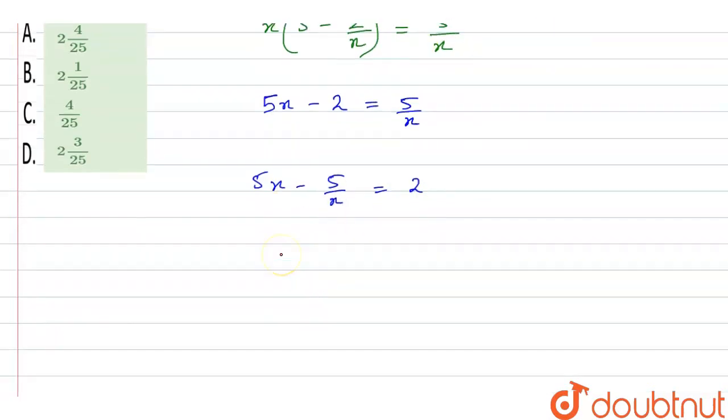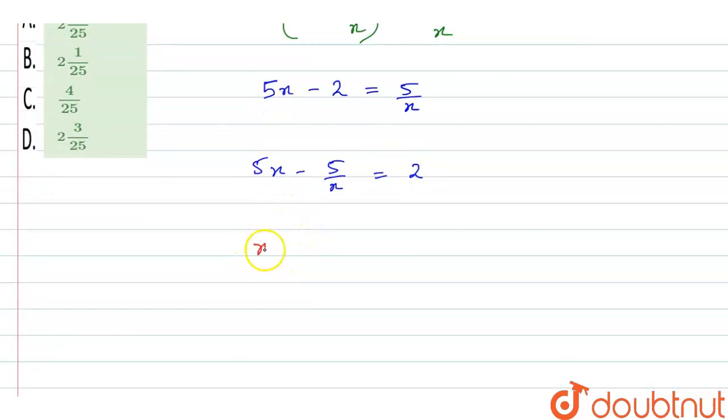So, it will be x minus 1 upon x is equal to 2 upon 5. It is the first equation, right?